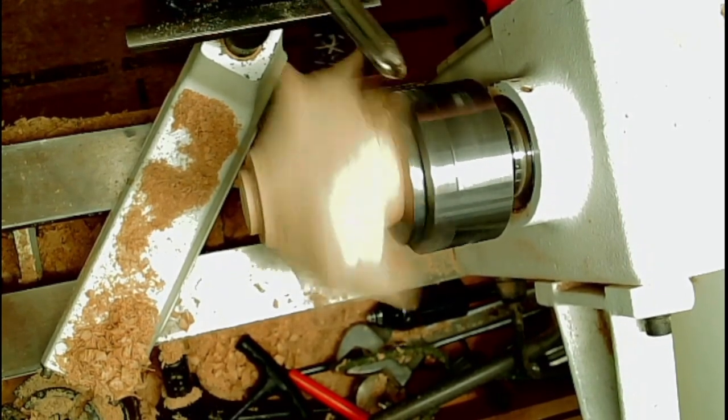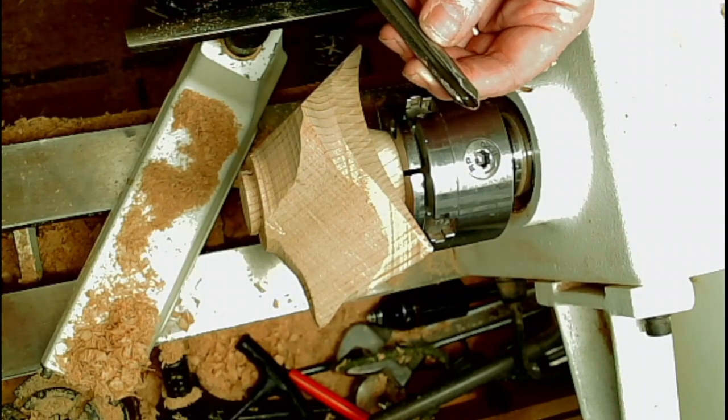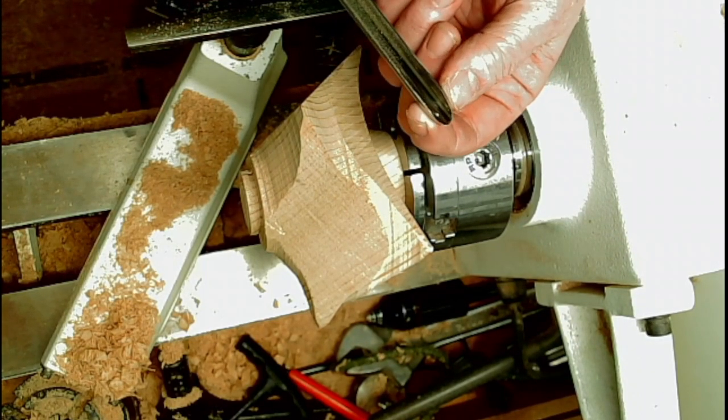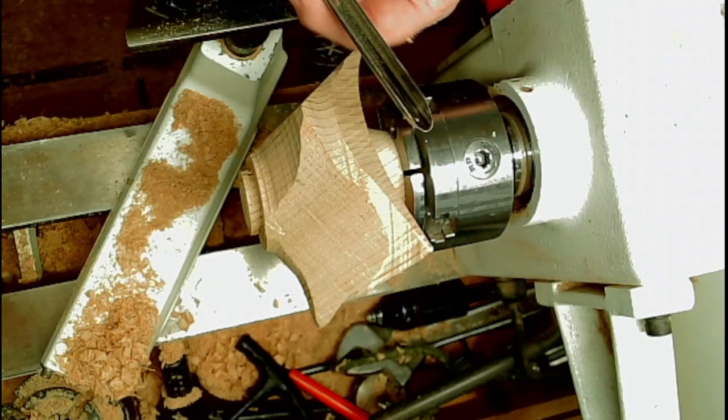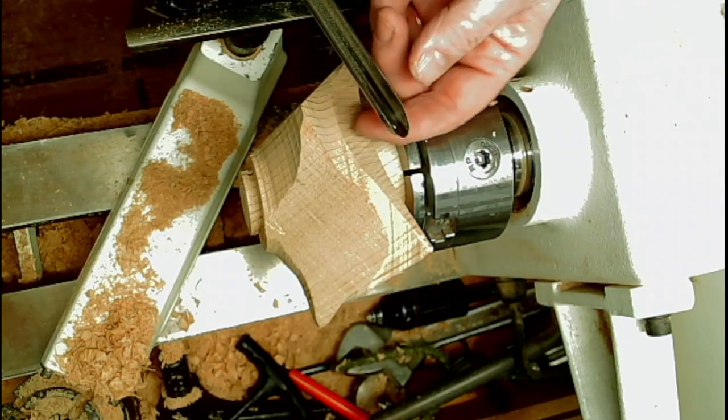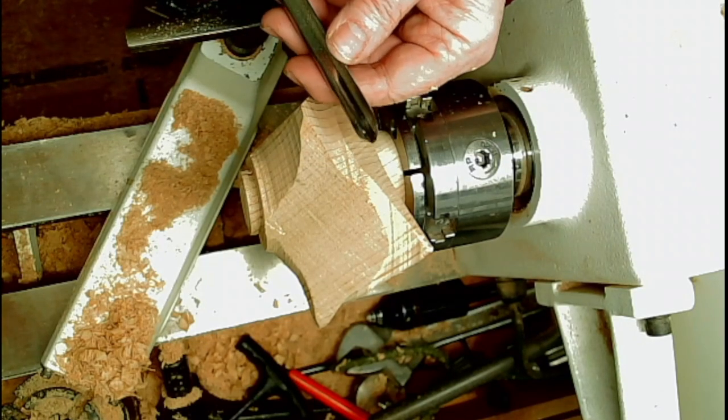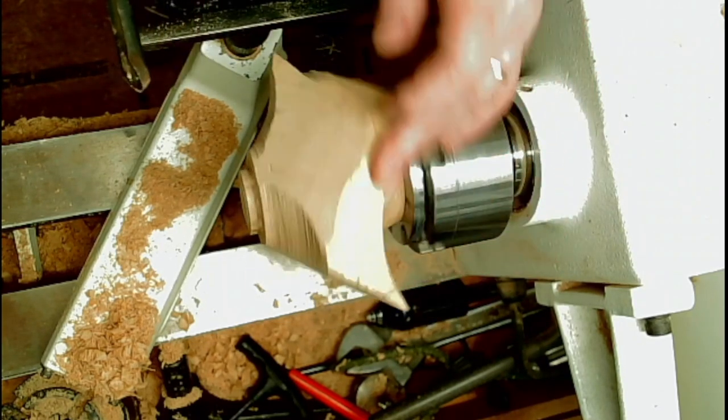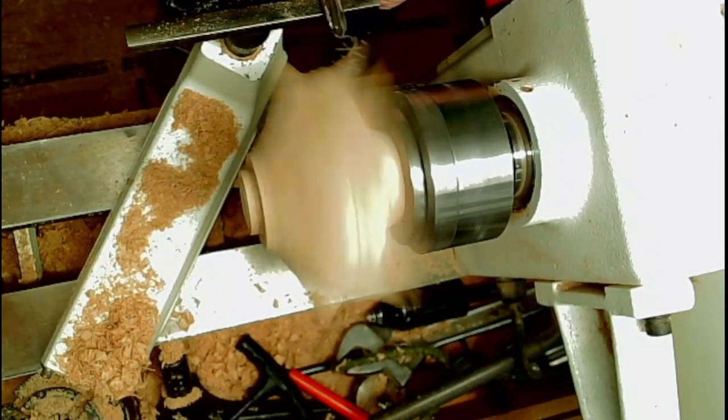My favorite spindle gouge, this is the Les Thorne gouge. You wouldn't believe it, but this has been made so that the sides have been ground back. This is not part of a hemisphere, it's a semi-circle with flatter sides. So when you grind this on the Pro Edge you get a perfect fingernail grind, because somebody's actually thought about it. Good old Mr. Les Thorne.